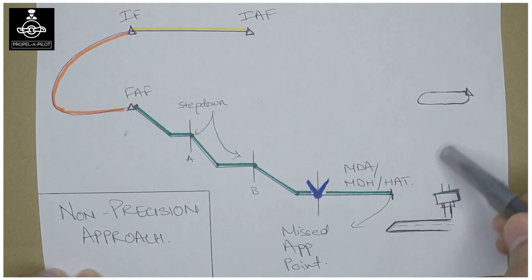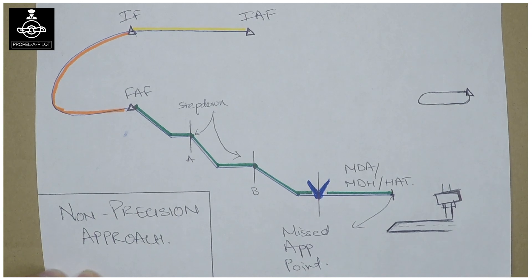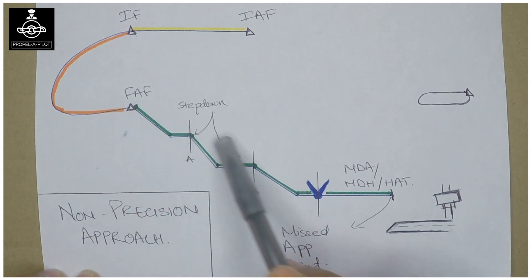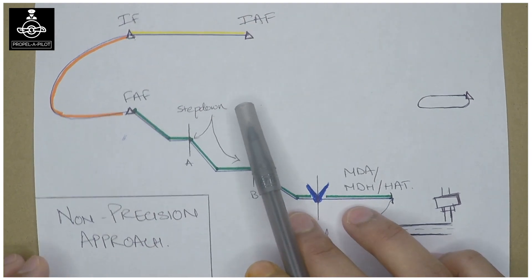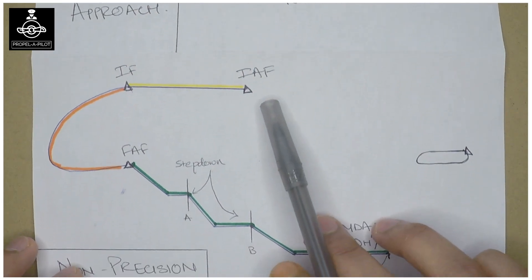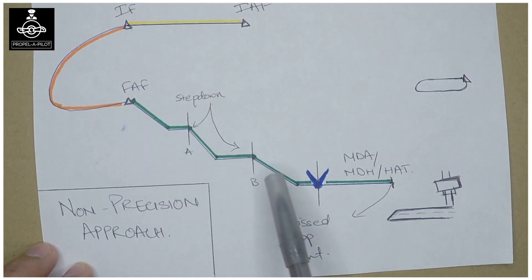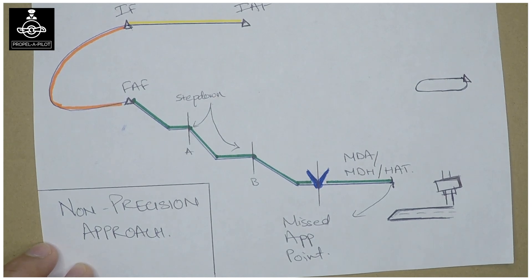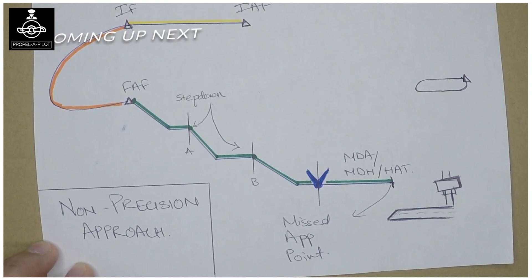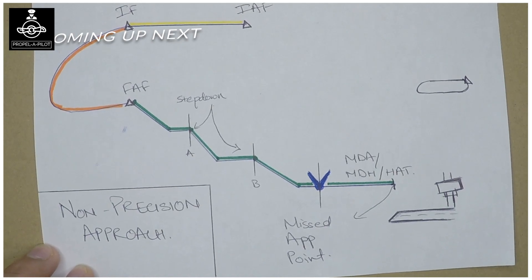The missed approach segment is the same thing. Primarily, the difference between the precision and the non-precision approach is the final approach segment. In the precision approach, you have a glide slope in the final approach segment, and in the non-precision approach, you have step-down fixes. Now, talking about approach with vertical guidance.